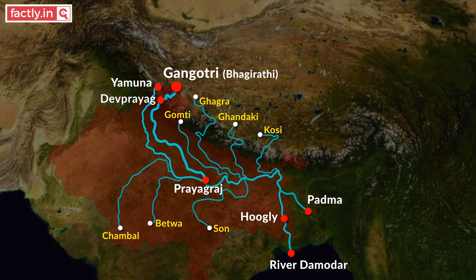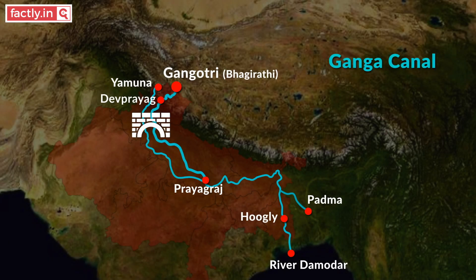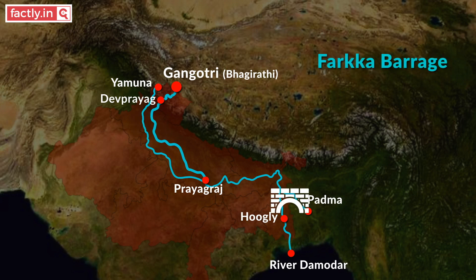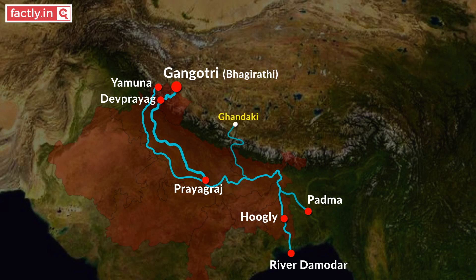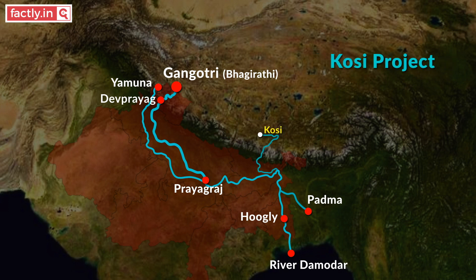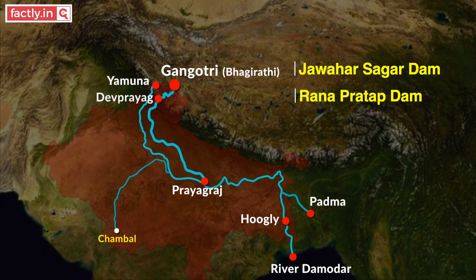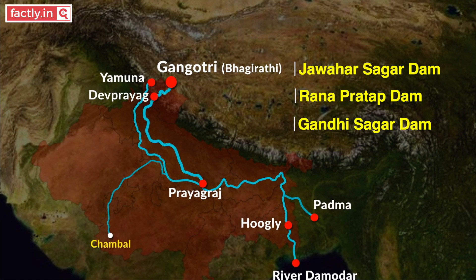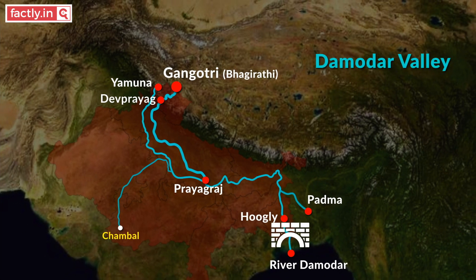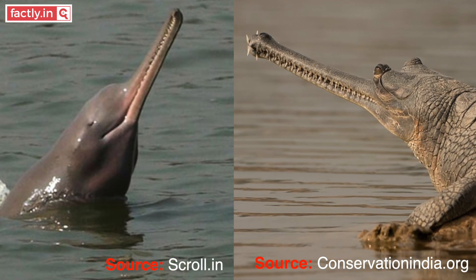Ganga is the lifeblood of the Gangetic plains and has many prominent places located on its banks. Major canals, dams, and multipurpose projects on Ganga and its tributaries include: the Ganga Canal irrigating the Doab region between Ganga and Yamuna; Farakka Barrage near Bangladesh; Bansagar Dam built on Son River; the Gandak Project on River Gandak in Bihar; the Kosi Project, a joint venture by India and Nepal on River Kosi; the Matatila Project on River Betwa; the Chambal Project on River Chambal, undertaken by Rajasthan and Madhya Pradesh, which also has Jawahar Sagar Dam and Rana Pratap Dam in Rajasthan along with Gandhi Sagar Dam in Madhya Pradesh; and the Damodar Valley Project on River Damodar. The Gangetic dolphin and Gharial are also found in the waters of River Ganga.